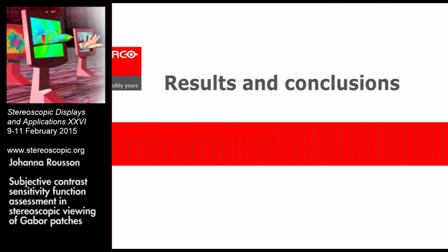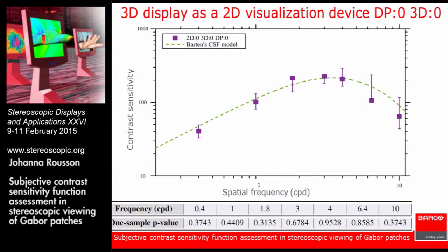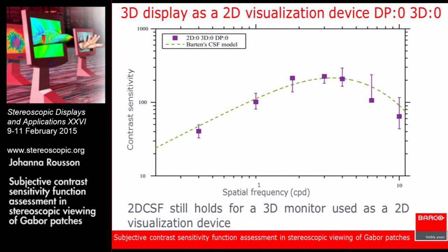For main results and conclusions: when using our 3D display as a 2D visualization device — depth plane of zero, 3D inclination of zero — we wanted to know if we were still in agreement with Barton's model. As shown on this plot and confirmed by the one-sample Wilcoxon signed-rank test, the null hypothesis is never rejected. This means no statistical significance was found between our measured medians and Barton's values. We conclude that the 2D CSF still holds for a 3D monitor used as a 2D visualization device.